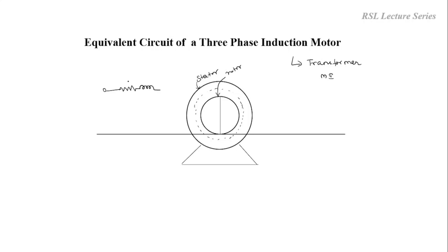On the stator we have the stator resistance and reactance and the no-load components R0 and X0. R0 is the core loss component and X0 is the magnetizing component. We have to represent the no-load current I0. I0 can be resolved into two components: one is IC, the current flowing through R0, and another one is IM, the current flowing through X0. IC is the active component and IM is the magnetizing component of the no-load current.